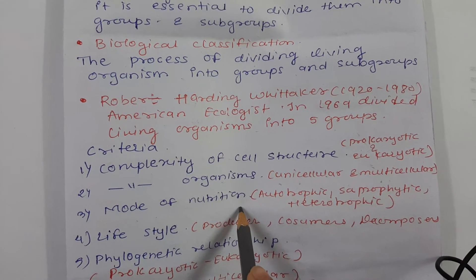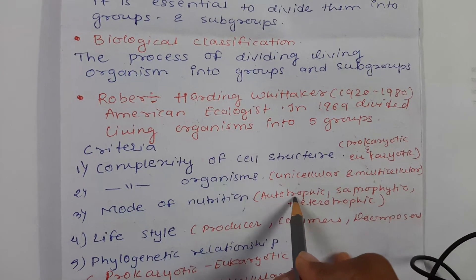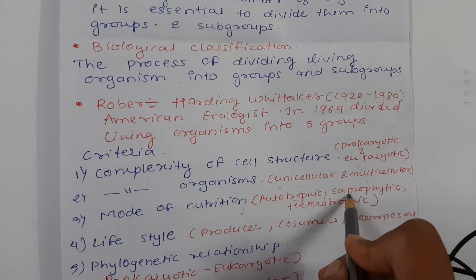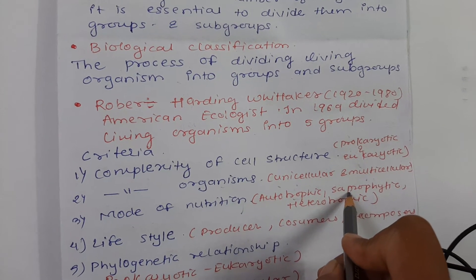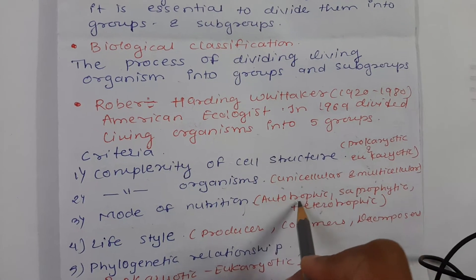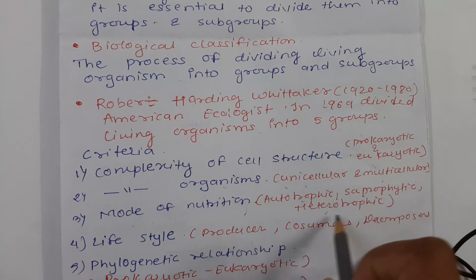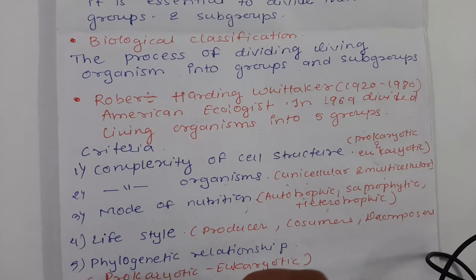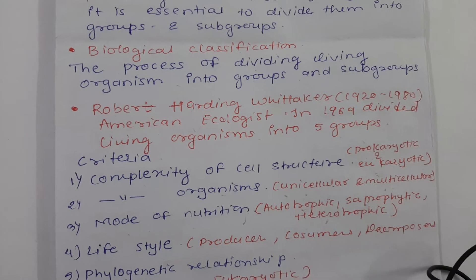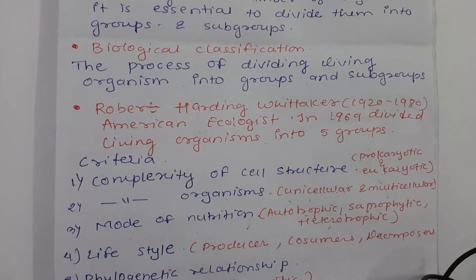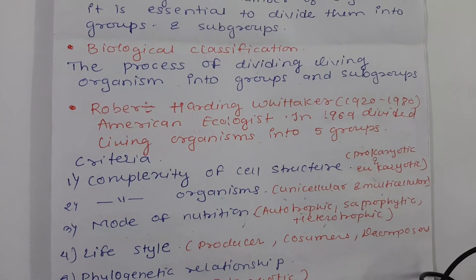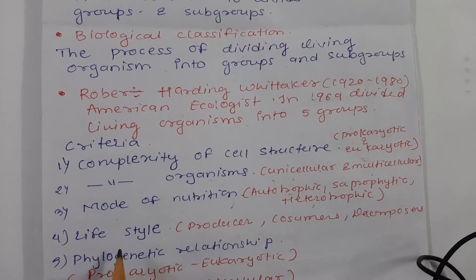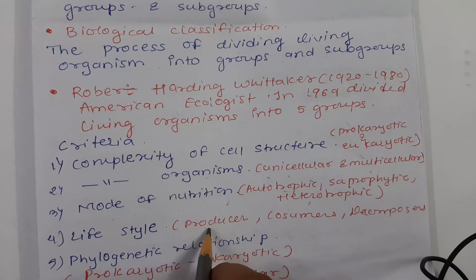The third criterion was mode of nutrition — that is, from where they get their energy. Some were autotrophic, meaning they were producers. Some were saprophytic, meaning they depended on dead and decaying matter. Others were heterotrophic, depending on autotrophs or other organisms. For example, some are vegetarian, some are non-vegetarian, and some are both.